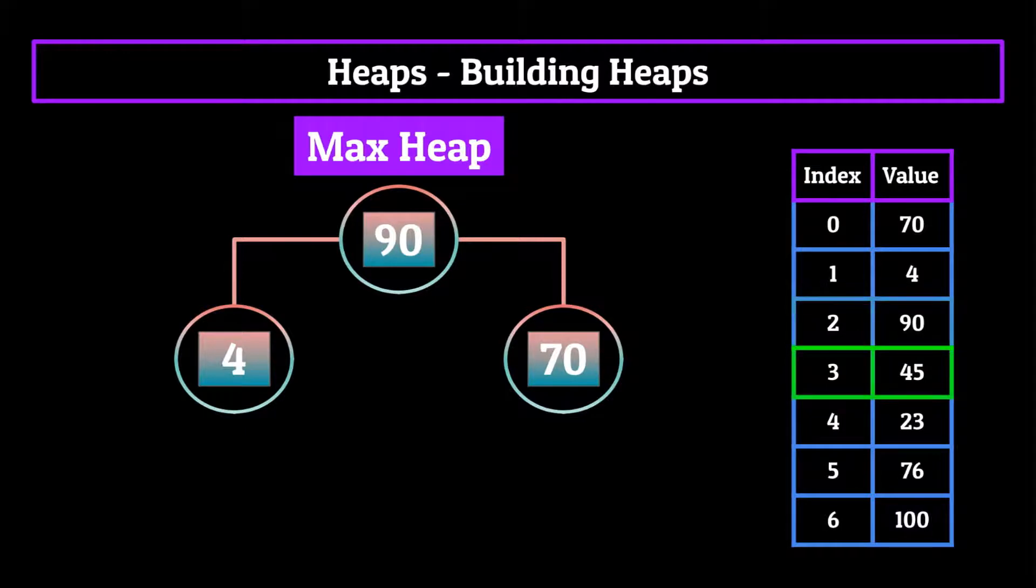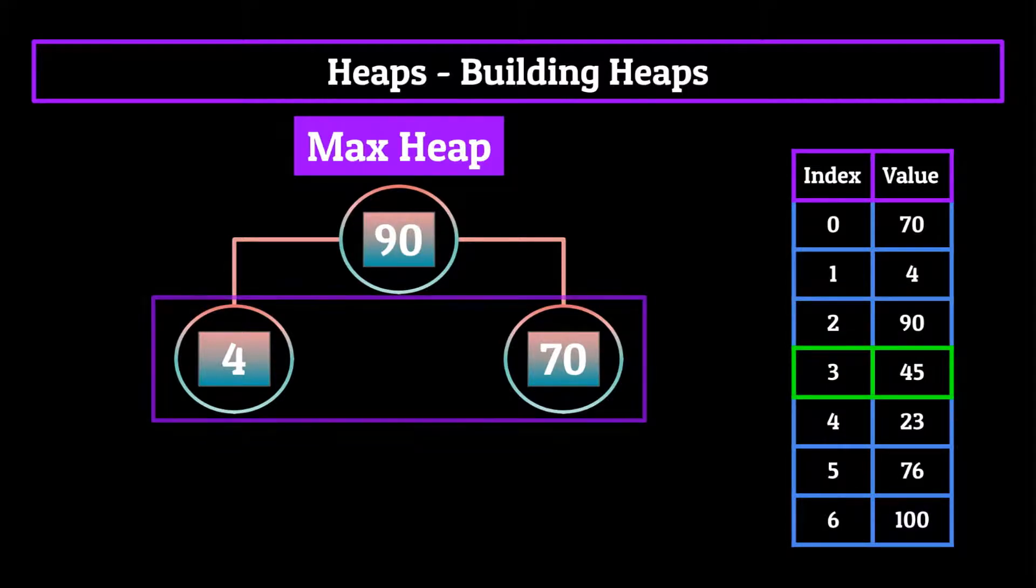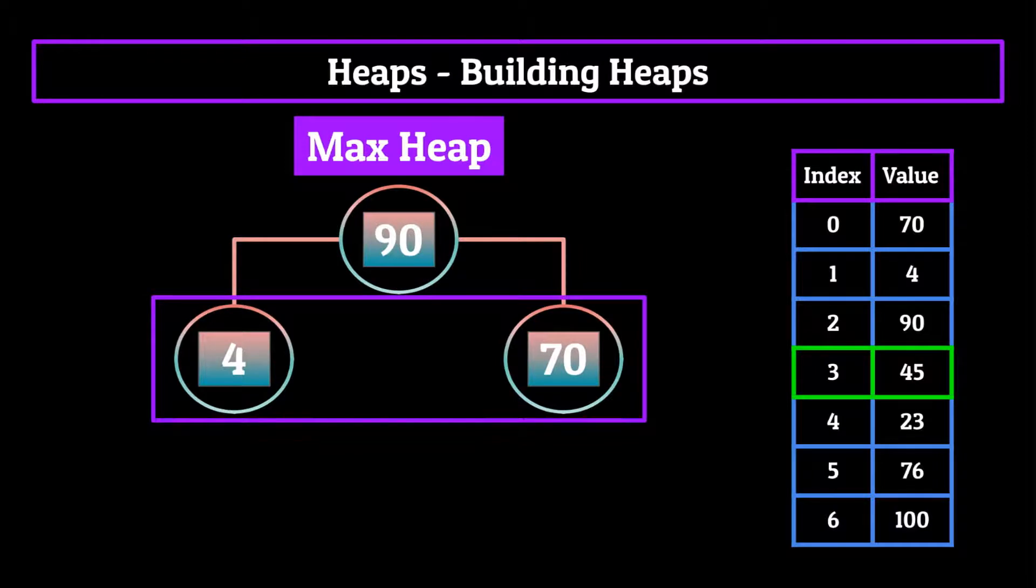Next, we would add 45 to the bottom left as a child of the four node, since we've run out of space on the second level of our heap. Then we would compare it to four, which it is greater than, so we would swap the nodes. Now we would compare 45 to 90. And since it is not greater than 90, it would stay put.